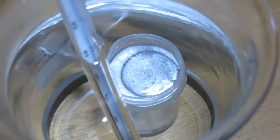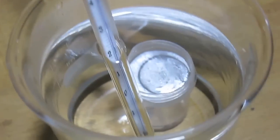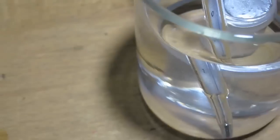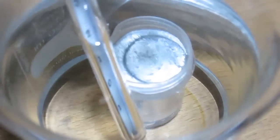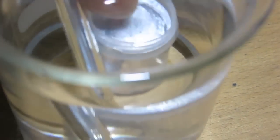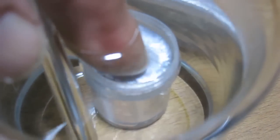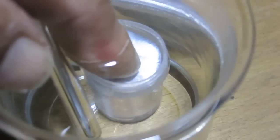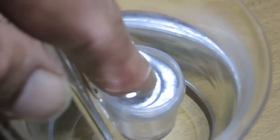It expands when it freezes, like water, unlike most other substances which contract when they freeze. Because it expands when it freezes, the solid metal floats on the molten metal, like ice on water.